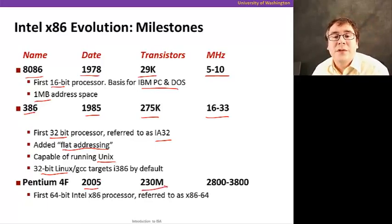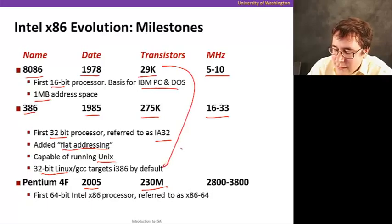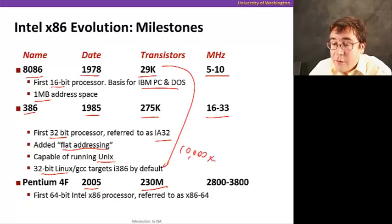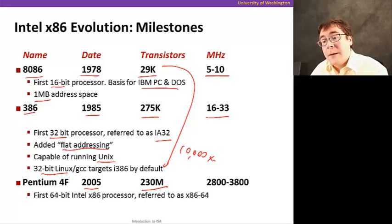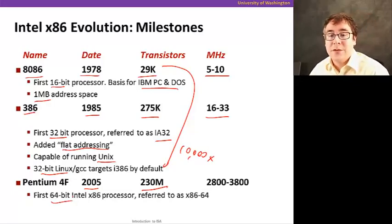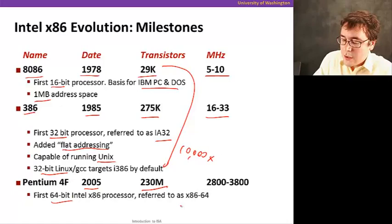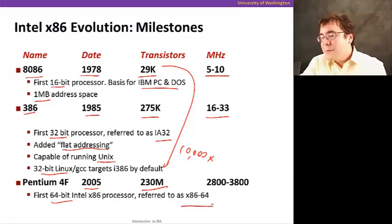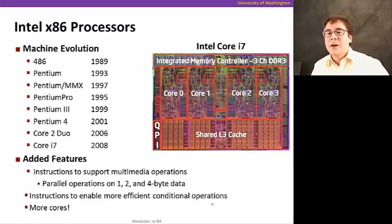Now, let's jump 20 years later and look at what happened. The Pentium 4, when it was introduced in 2005, had 230 million instructions. We're talking about a 10,000-fold increase in the number of transistors. And a similar, and about a huge increase in frequency as well. And then, the Pentium 4F was the first 64-bit processor, also introduced by, first 64-bit x86 processor introduced by Intel. This is also referred to x86-64. And AMD was actually involved in defining what the x86-64 looks like as well, which we're going to see in a second.